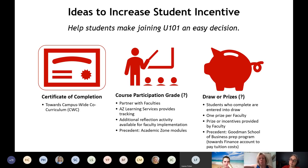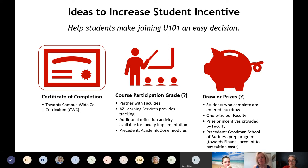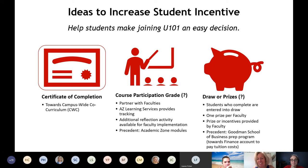The reflection activity asks students to choose one strategy from each of the five lessons and identify why it would be helpful for their specific course — causing them to reflect on U 101 in relation to that class. Another option we've seen through Goodman is giving a financial honorarium toward tuition for one student who completes it from a faculty. It's an interesting incentive concept regardless.